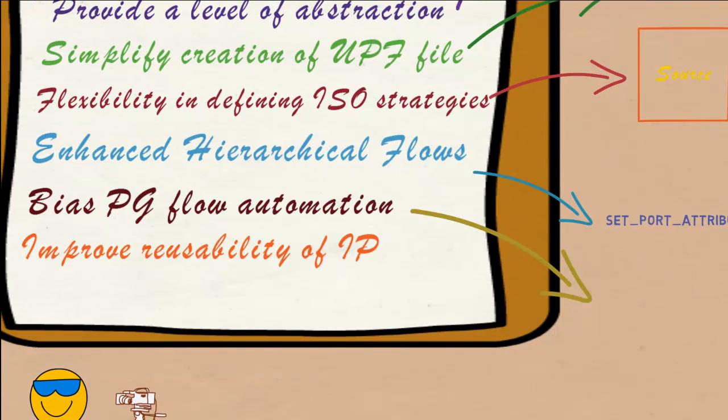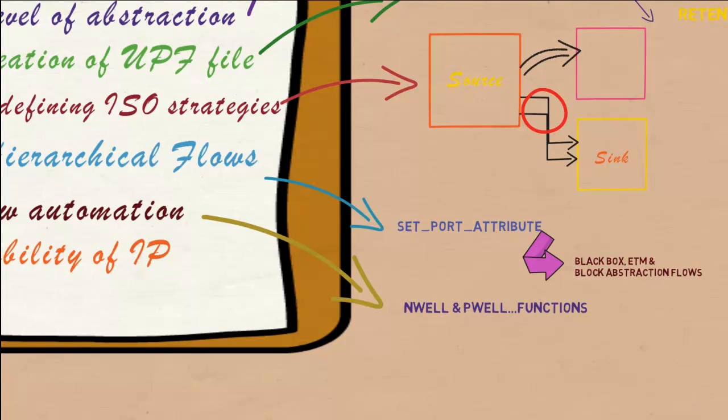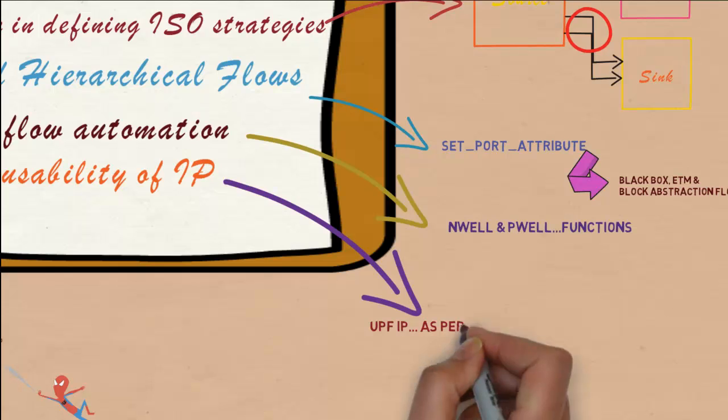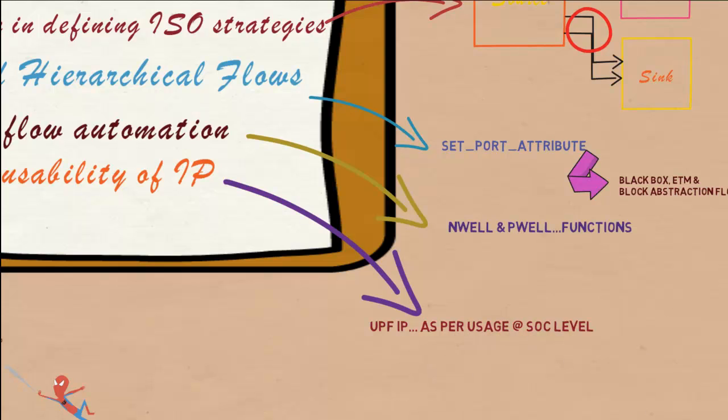Usage of supply set functions, N-Val and P-Val, automate the bias PG flows. In supply set flow, the UPF IPs can be refined as per the usage at SOC level.